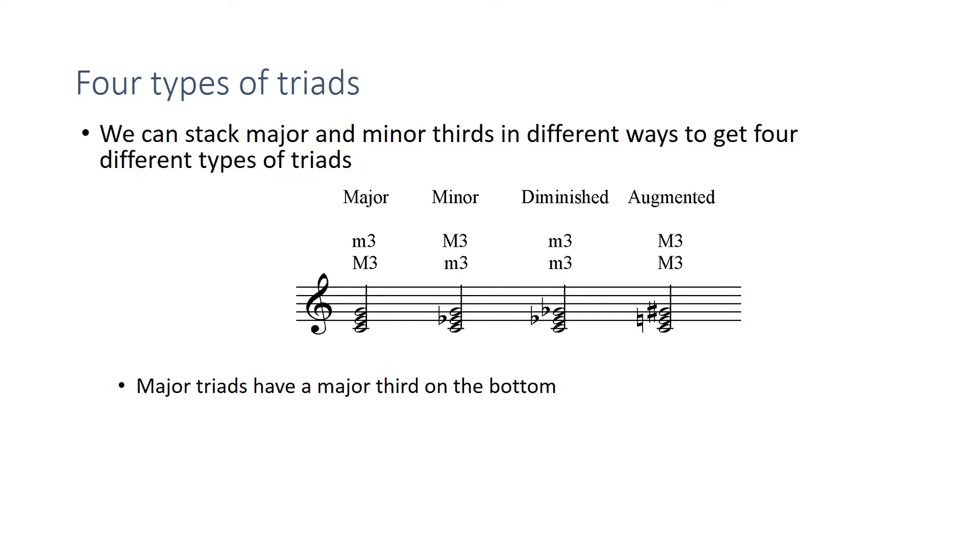Major triads are called major because they have this major third on the bottom. So here's the major third, and then a minor third stacked on top. It gives this the major triad. Minor triads are called minor because they have the minor third on the bottom, and then that has a major third on top.